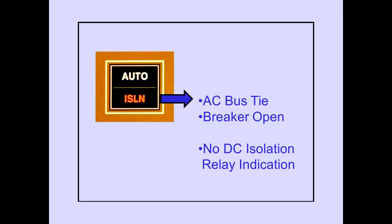Automatic isolation of an AC bus by the bus tie breaker does not open the DC isolation relay. Illumination of the AC bus isolation light only indicates the AC bus tie breaker is open. There is no flight deck indication of the status of a DC isolation relay.